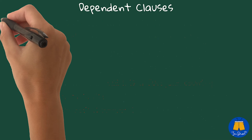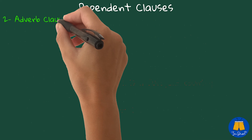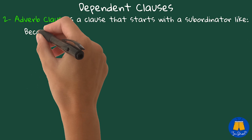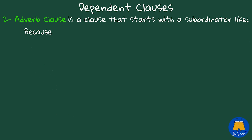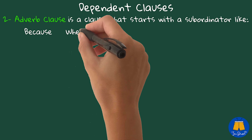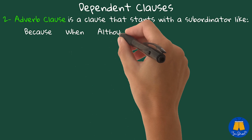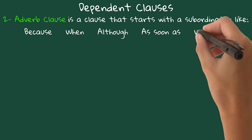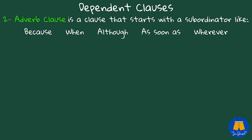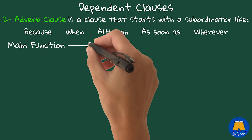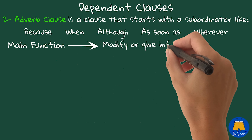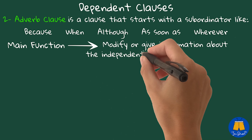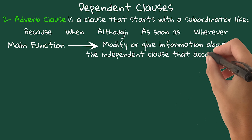An adverb clause is a clause that starts with a subordinator like because, when, although, as soon as, and wherever. Its main function is to modify or give information about the independent clause that accompanies it.